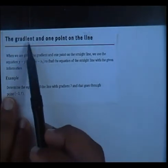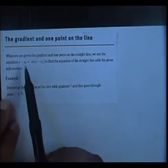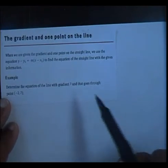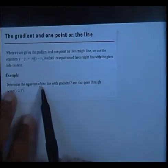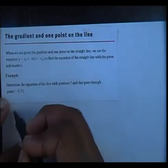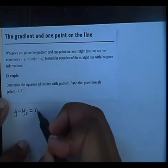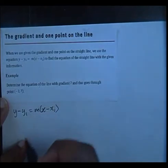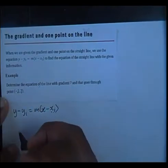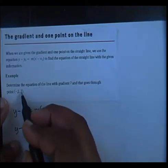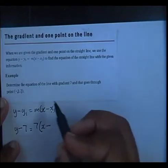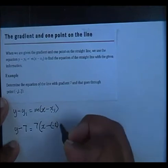The second example is when you're given the gradient and one point on the line. There's the formula y minus y1 equals m times x minus x1 that you can use to find the equation of a straight line. In this case, we're supposed to determine the equation of the line with gradient 7 going through the point negative 2 and 7. So m is your gradient, y1 is the y-coordinate, and x1 is the x-coordinate of that point. Now let's substitute: y minus 7 equals 7 times x minus negative 2.